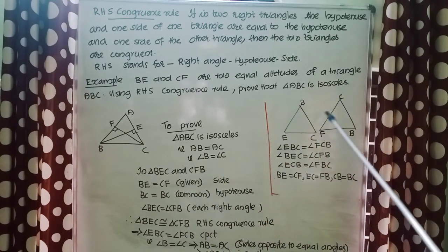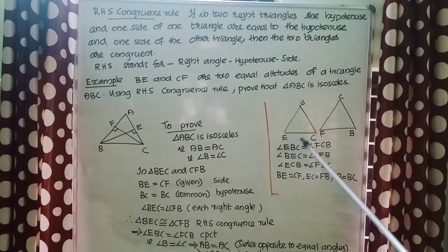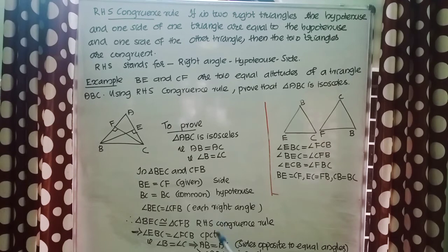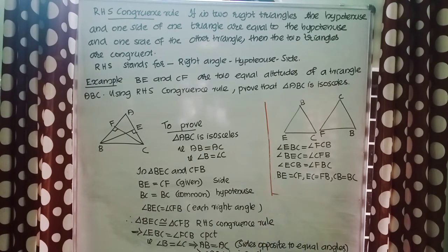We can conclude that triangle BEC is congruent to triangle CFB by the RHS congruence rule. Since these two triangles are congruent, angle EBC equals angle FCB, which are corresponding parts of congruent triangles. Angle EBC is angle B and angle FCB is angle C, so angle B equals angle C. Since angle B equals angle C, sides opposite to equal angles are equal, so AB equals AC, and therefore triangle ABC is isosceles.